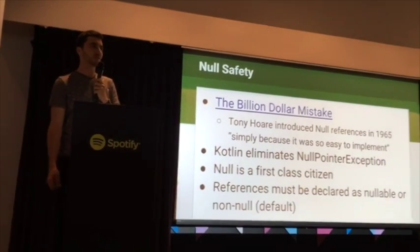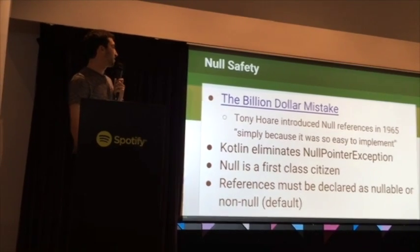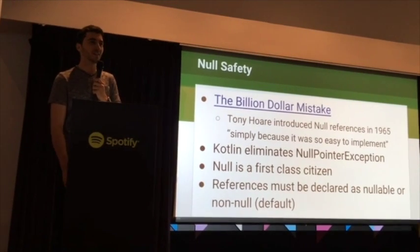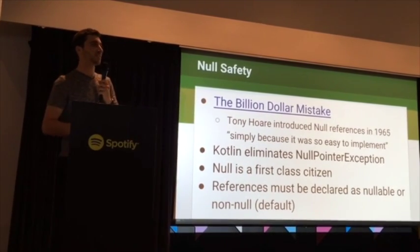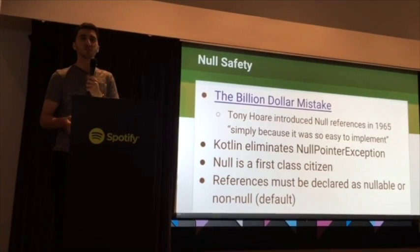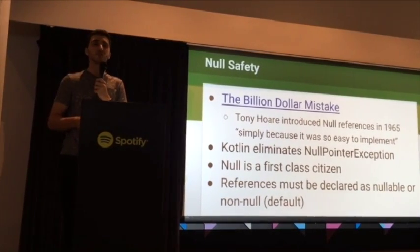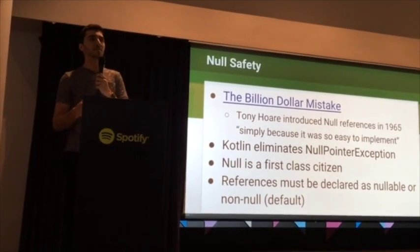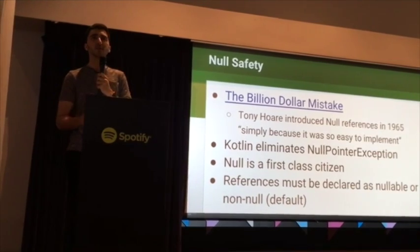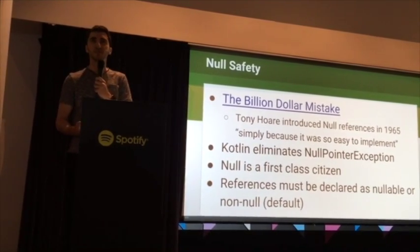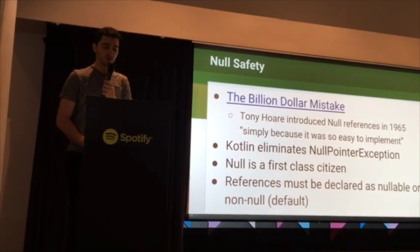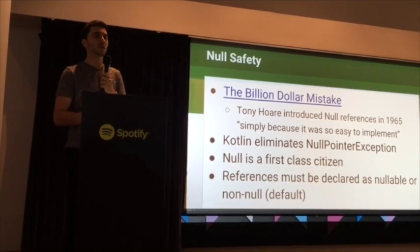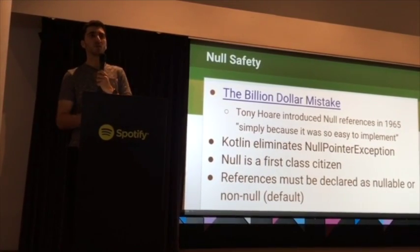The next major feature is called null safety. The idea of null is often referred to as the billion dollar mistake, because of all the time developers have spent debugging and fixing null pointer exceptions and the general damage caused in applications. Kotlin tries to fix this by reducing the possibility of a null pointer exception even happening — by requiring you to specify every time you create a reference or object whether it's nullable or non-null.